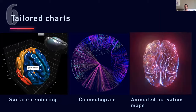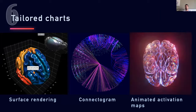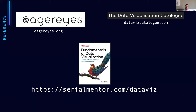And probably our favorites are the tailored chart types — maybe a surface rendering for your brain data, or you can use a connectogram, or even create a GIF for animated activation maps. Up to this point, the serialmentor.com database — the digital version of the book — helped me a lot. It's a really great resource with in-depth descriptions about everything I was talking about.